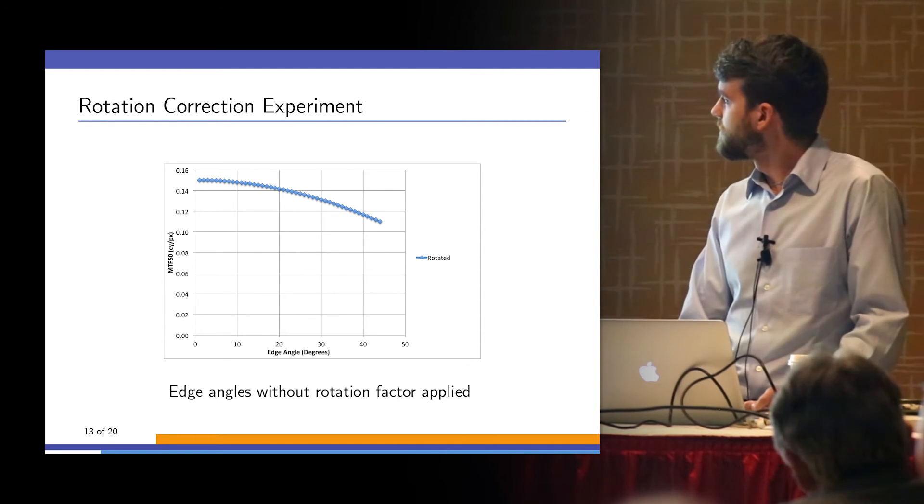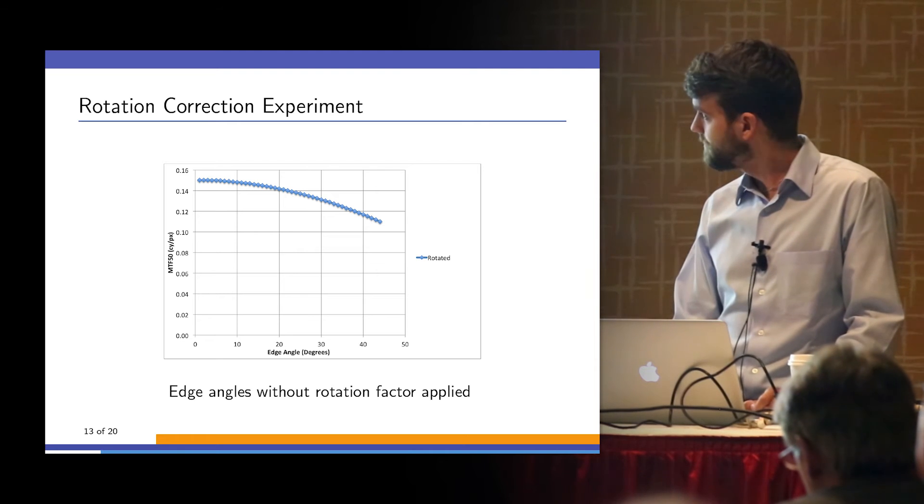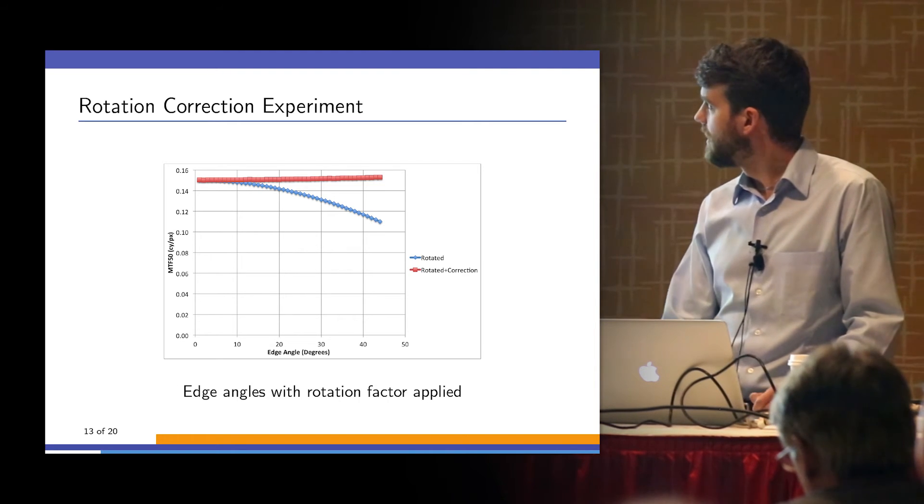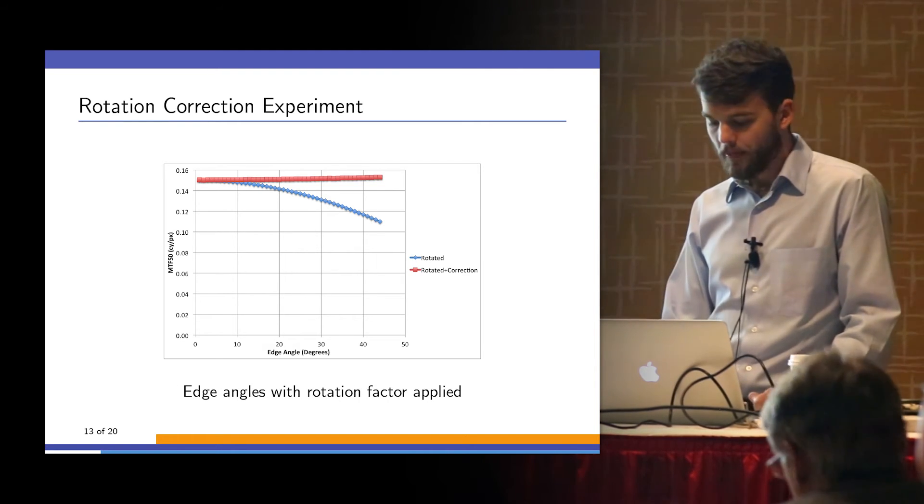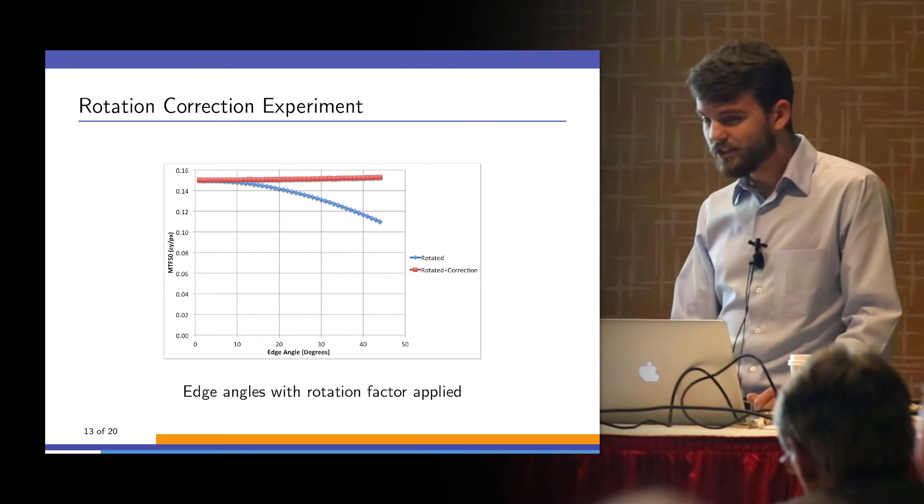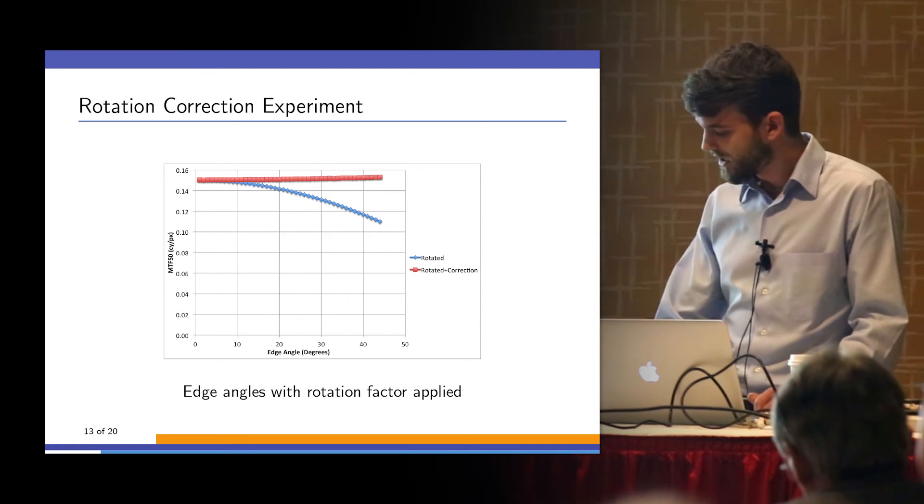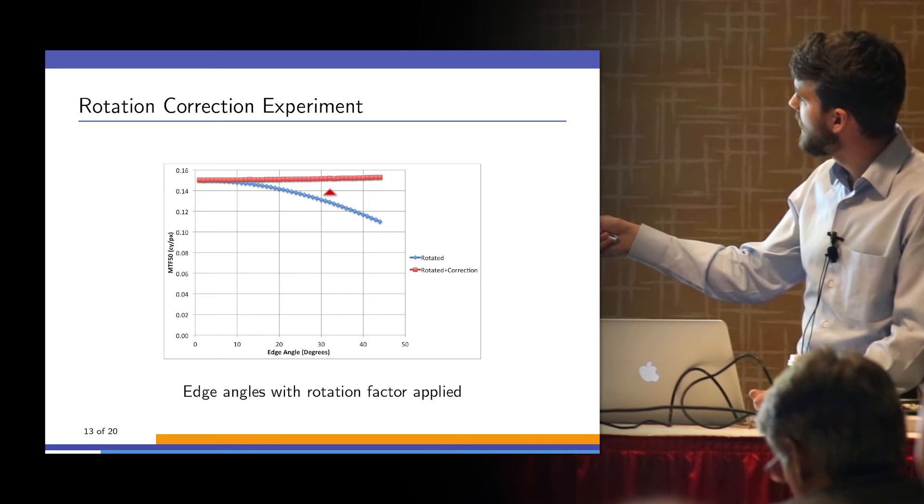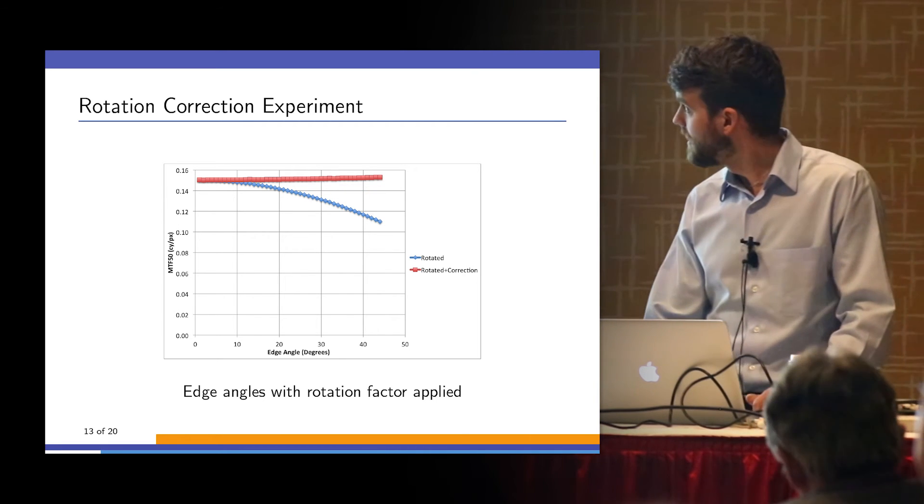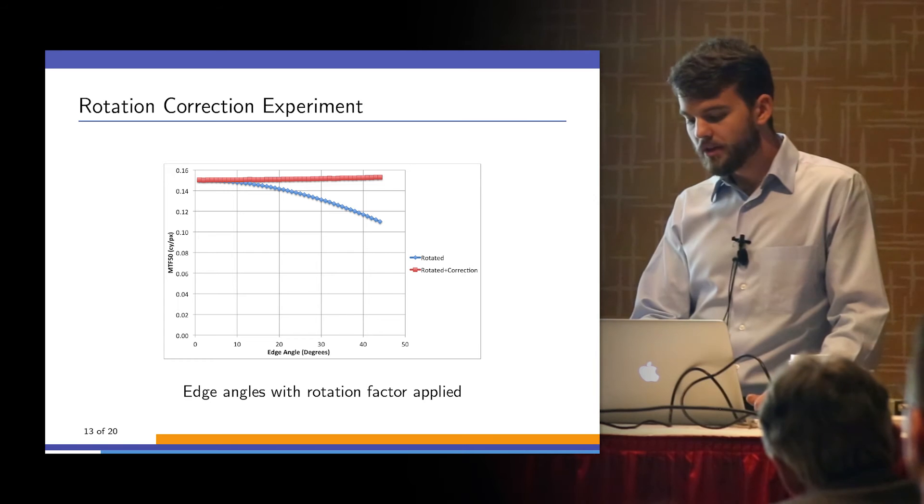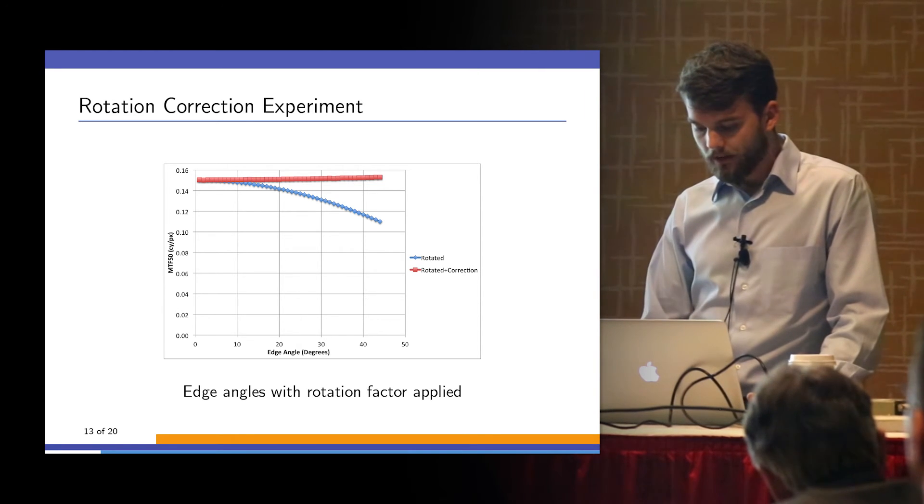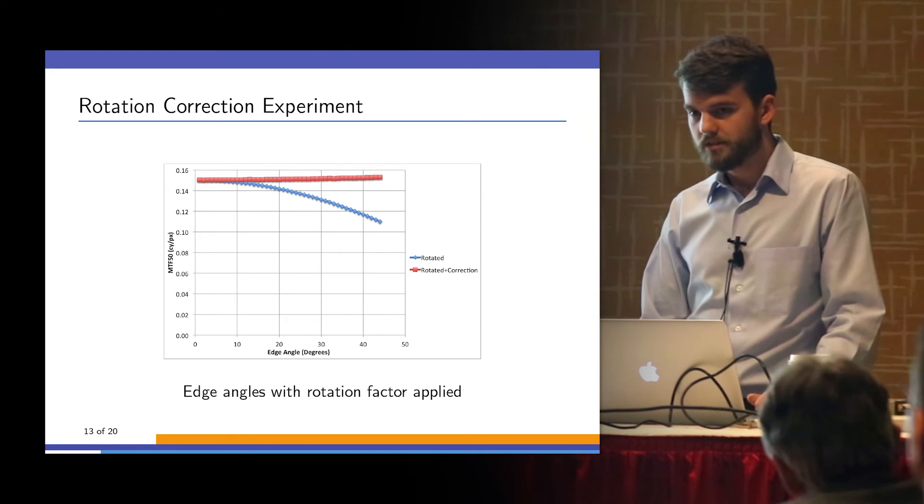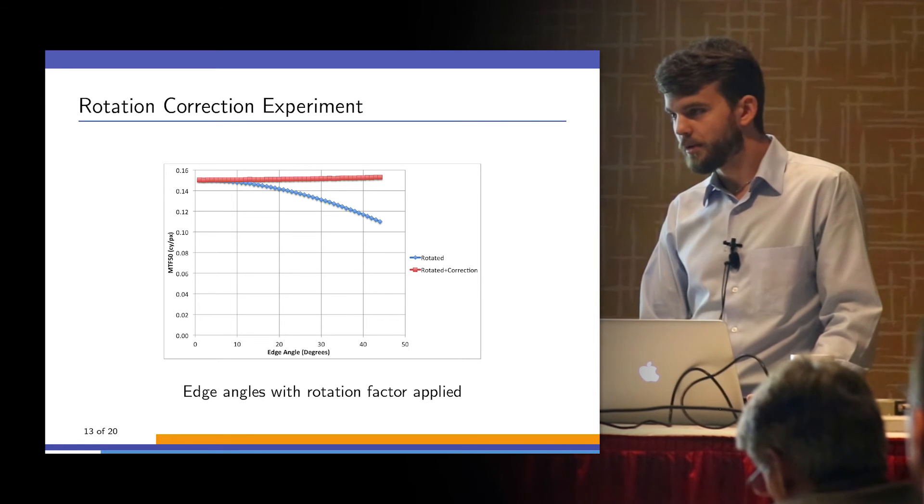Here's where we apply the correction factor. Here is the uncorrected, and now we correct it. Significant improvement. There is still an error though, and it's a systematic error. It's a little hard to see on the projector, but that line is slowly increasing there. Now the difference between 1 degree and 44 degrees is 0.3 percent rather than 22 percent, which is what we were getting before.